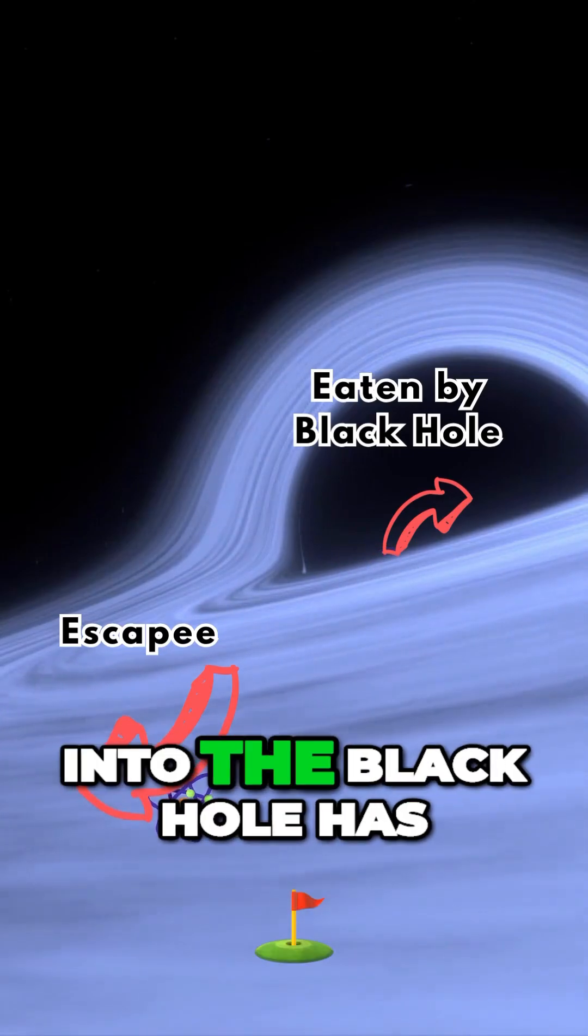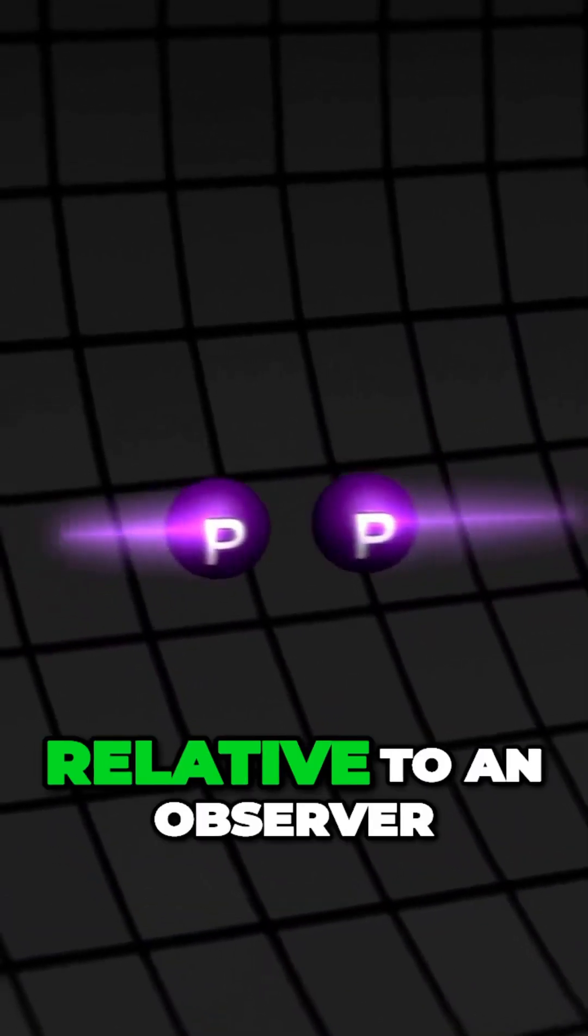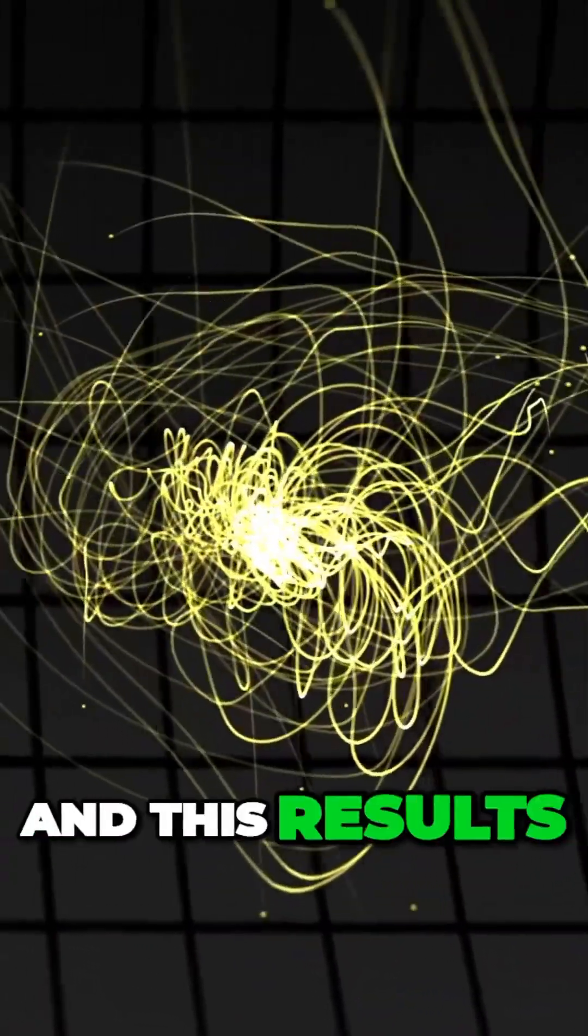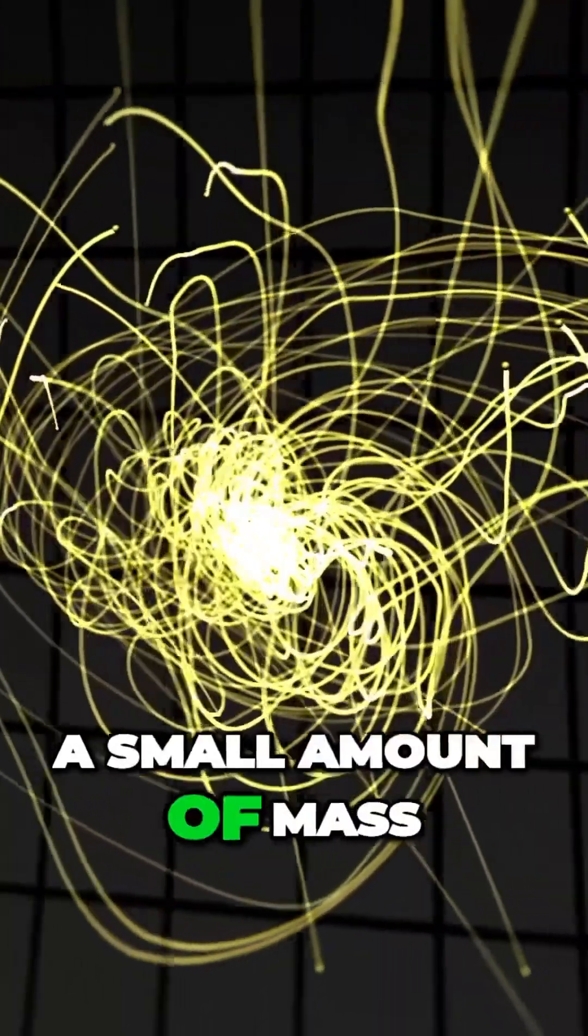The particle that falls into the black hole has negative energy, relative to an observer far away from the black hole, and this results in the black hole losing a small amount of mass.